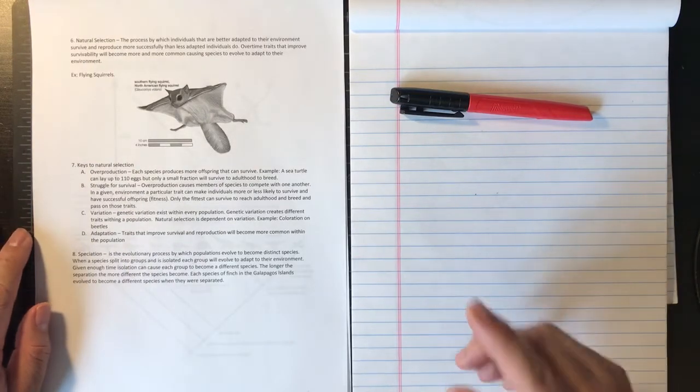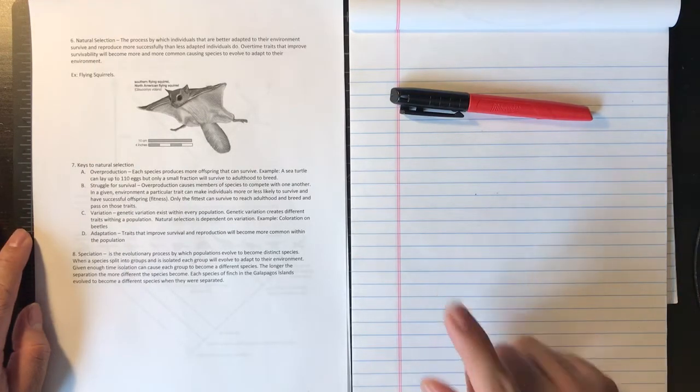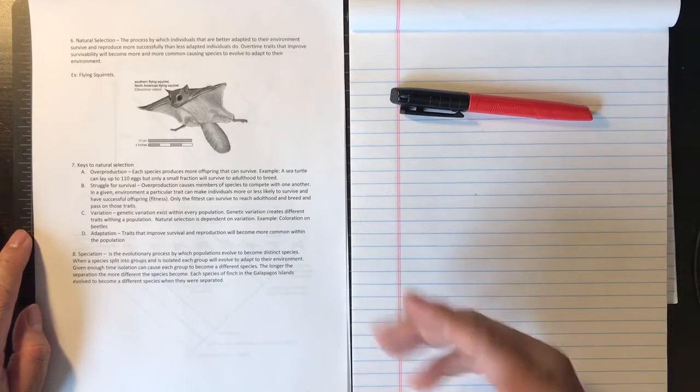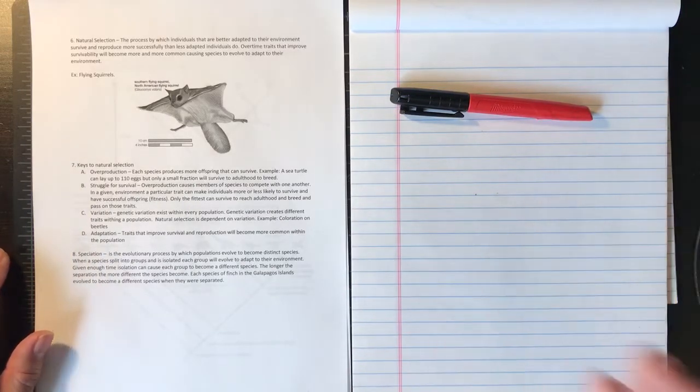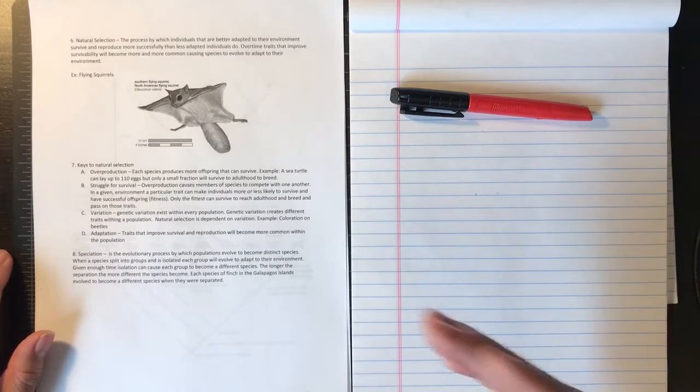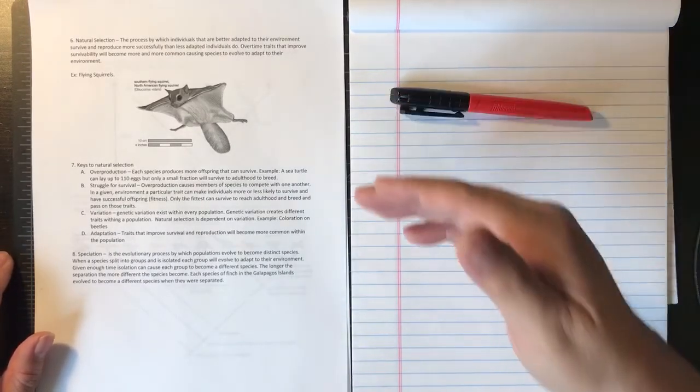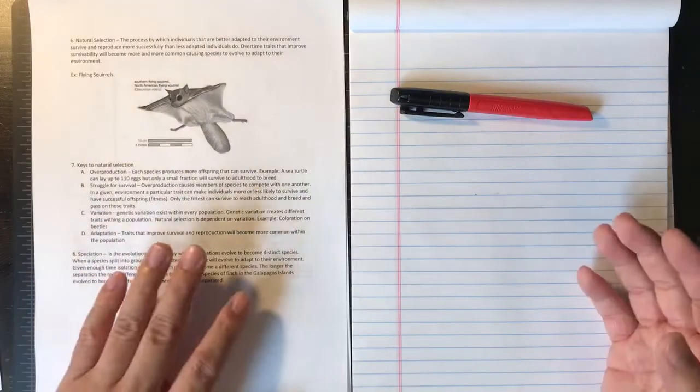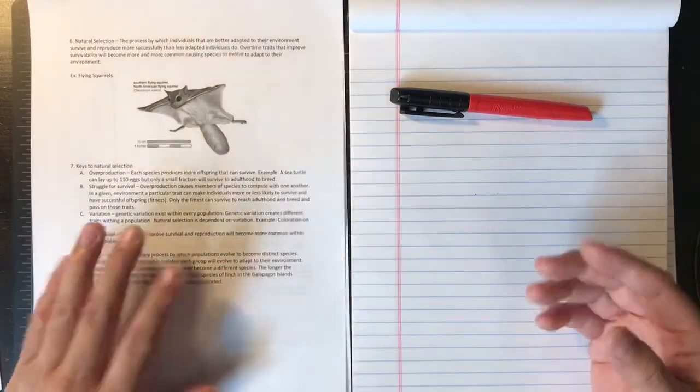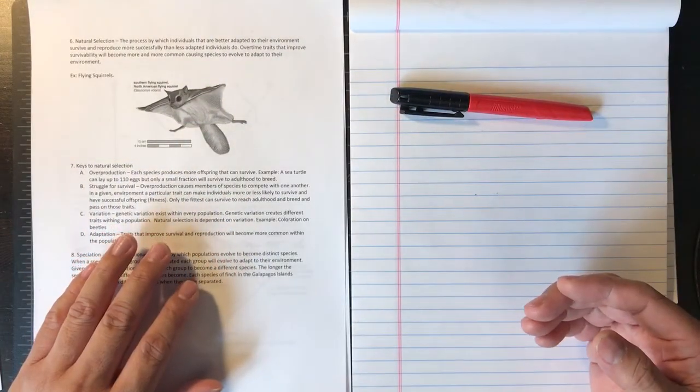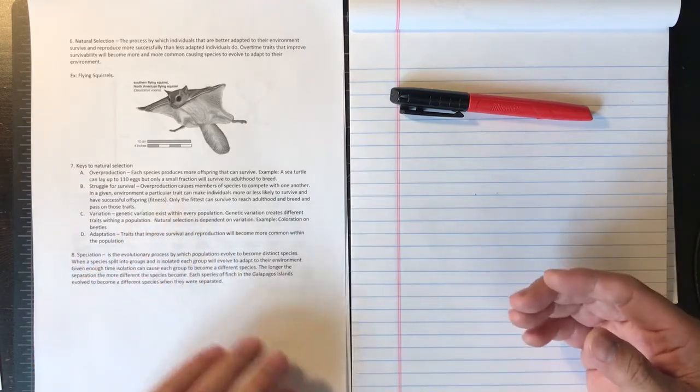Now according to Darwin, the Galapagos Island finches underwent speciation. They were separated for a very long time by their environment, and then they adapted to that environment and they became different species over time. Now when you put them together, they will not interbreed because they're different species.